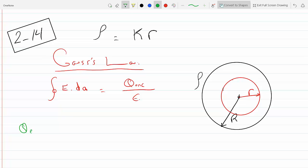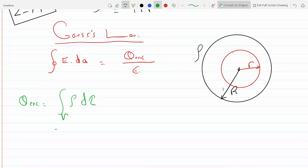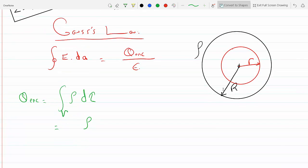we will have to integrate. So Q enclosed is equal to integral of rho dτ on that volume V. And so this is equal to rho, which is Kr, and dτ is just r squared sine theta dr dθ dφ.